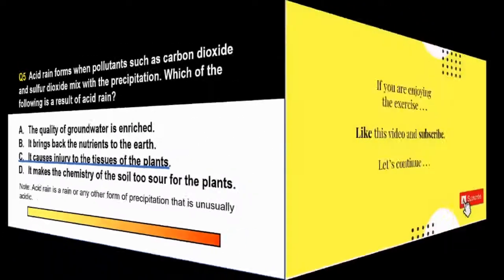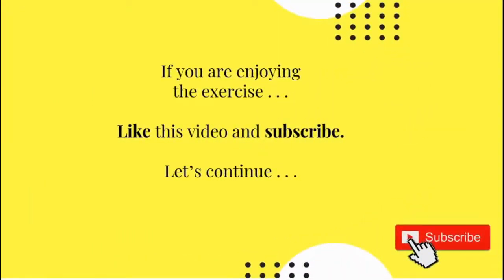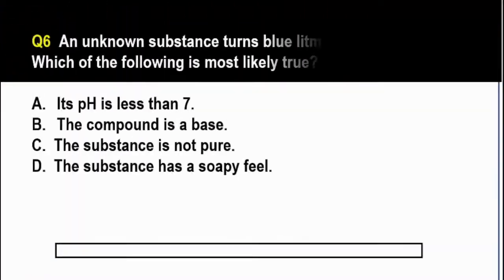Question number six. An unknown substance turns blue litmus paper to red. Which of the following is most likely true? A. Its pH is less than 7. B. The compound is a base. C. The substance is not pure. And D. The substance has a soapy feel.